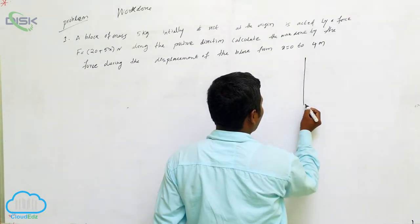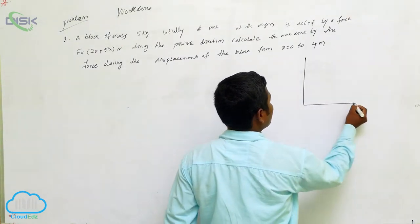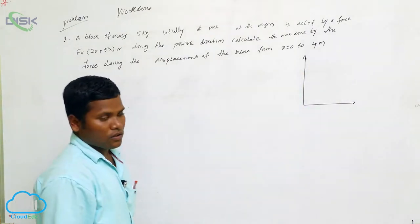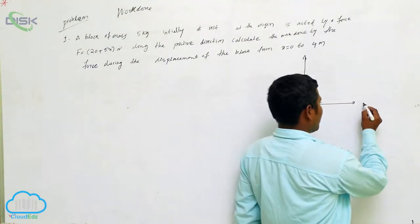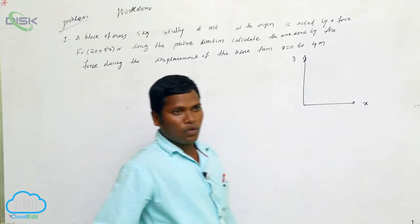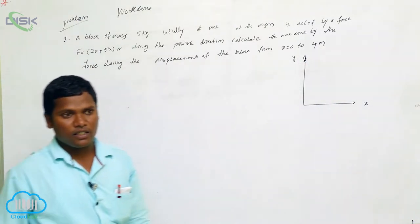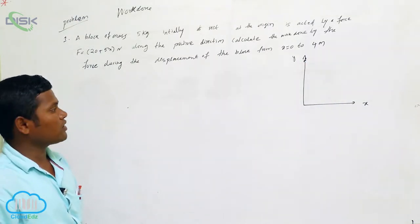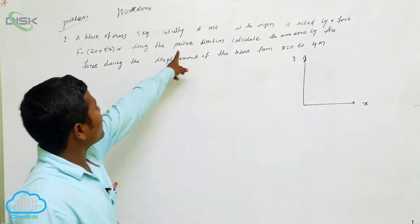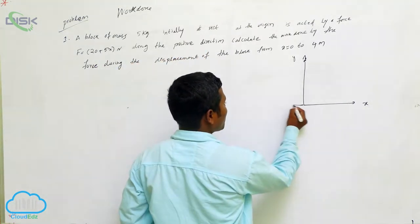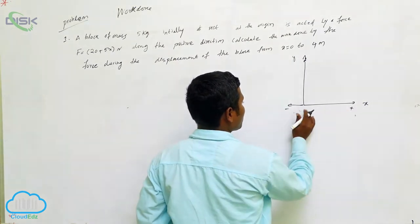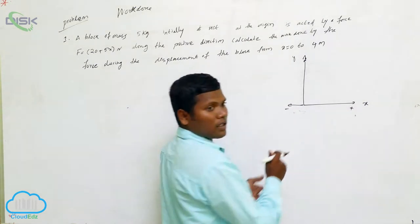Let us consider what values are given in the problem. Let's draw this: this is the x-axis, this is the y-axis. We won't discuss the y-axis here — we only need to consider the x-axis, because the block is moving in the positive x-direction.